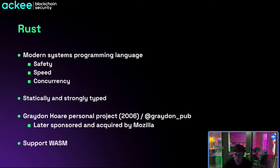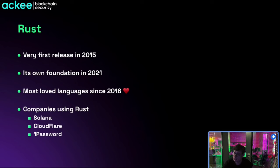Rust supports WebAssembly and has a lot of popularity in systems programming, game engine development, and obviously in the blockchain ecosystem — starting with Solana and a lot of the new Layer 1 blockchains popping up right now like Aptos or Sui, which also support Rust as their main programming language for developing programs. The very first release of Rust came in 2015 and it saw rapid growth, establishing its own foundation in 2021 — only six years after the first release.